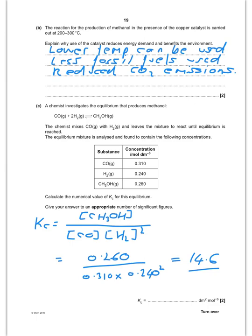Explain why the use of a catalyst reduces the energy demand and benefits the environment. Well the lower temperature can be used, which means less fossil fuels are used, which reduces CO2 emissions.